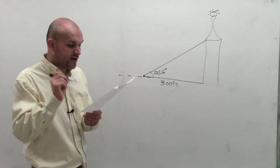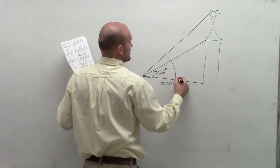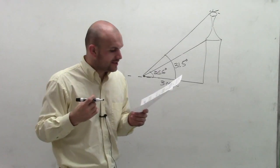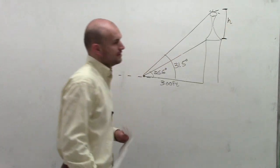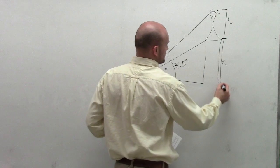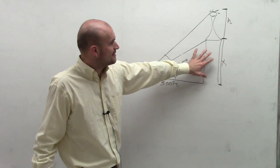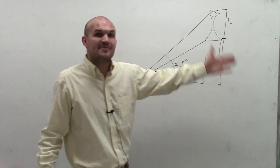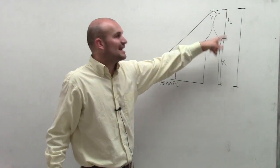The angle of elevation to the top of the antenna is 31.5 degrees. So that larger angle going up to the top of the antenna is 31.5 degrees. What they want us to do is determine the height h of the antenna — that distance between the base and top of the antenna. The problem is we don't know x, the height to the base of the antenna, nor the total height. However, if we use our triangles to find x and then x plus h, we can subtract the two to figure out h.